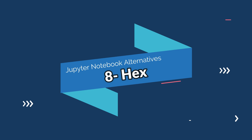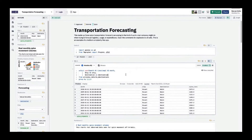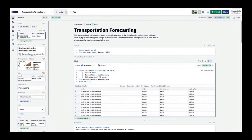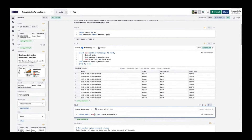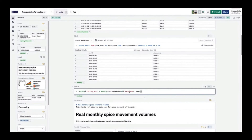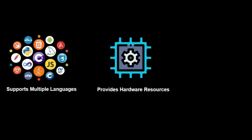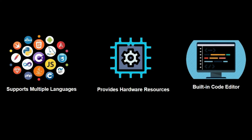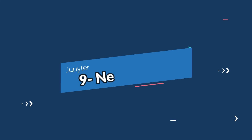On number eight, we have Hex, which is also a cool alternative to Jupyter Notebooks as it provides a number of additional capabilities. Some main features of Hex are support for a wide variety of programming languages including Python, R, and Julia, access to powerful hardware resources including GPUs, a built-in code editor, and support for a wide range of libraries.